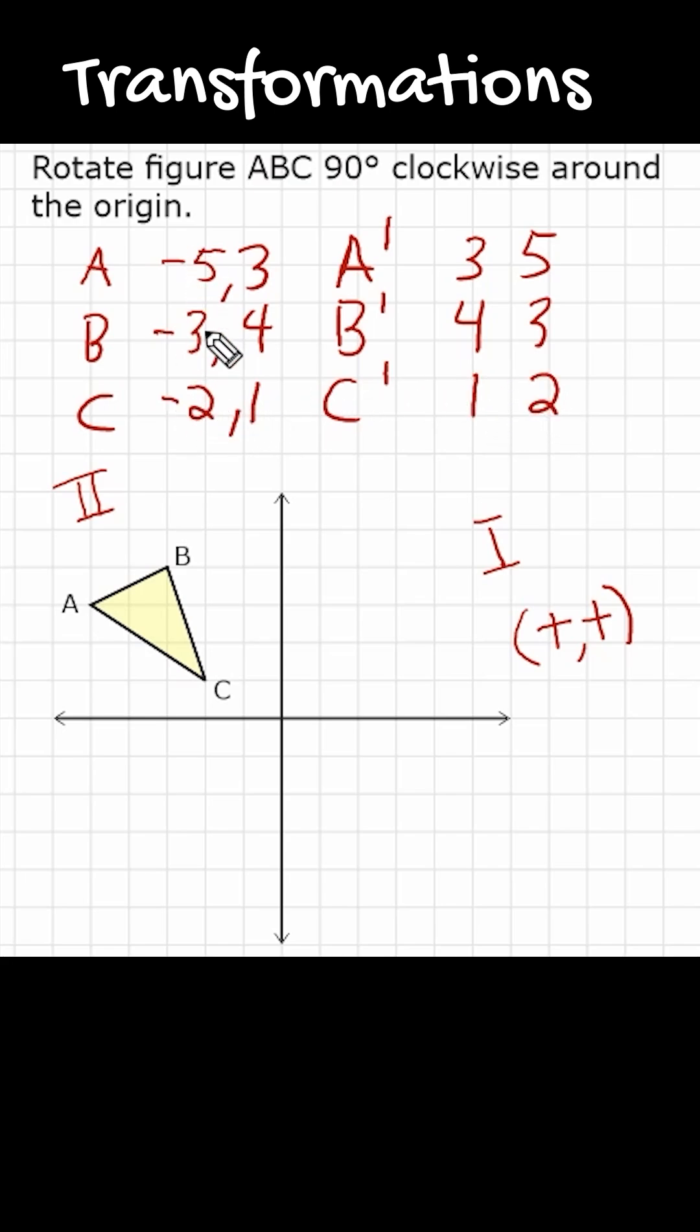Now first, I disregarded the sign altogether. I just looked at the absolute value because after you switch those values, then you have to determine is your X value going to be negative or positive? Same thing with your Y. And because we know we are rotating this object to quadrant number 1, everything is going to be positive.